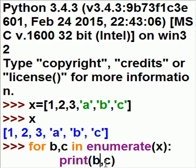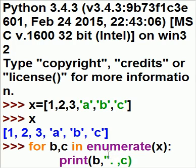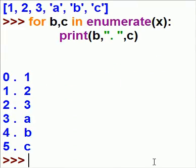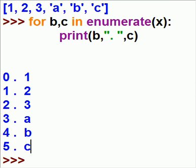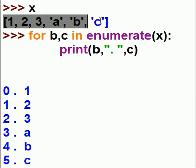I can make it a little bit nicer by putting in a comma and a period in the space, like that. So we have five items — 1, 2, 3, A, B, C — that's what we have here in our list.